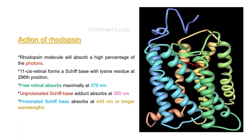If retinal is attached to opsin but there is no isomerization — that is, no conversion of the cis form of retinal to the trans form — it absorbs 380 nanometers of wavelength of light. If it is attached and isomerized, meaning the retinal is converted from cis form to trans form, it then absorbs 440 nanometers of wavelength of light.